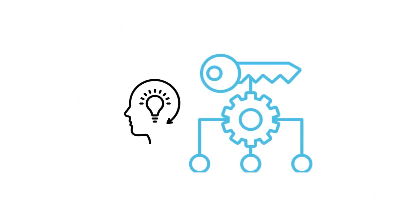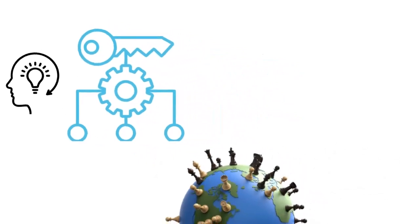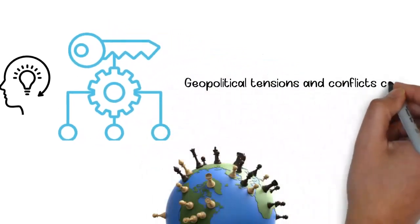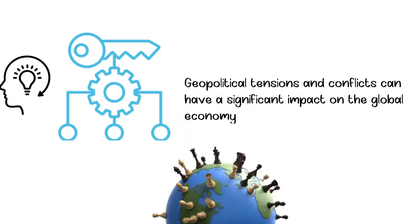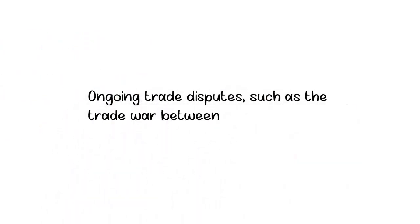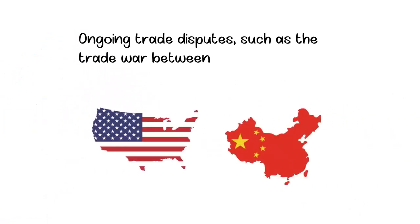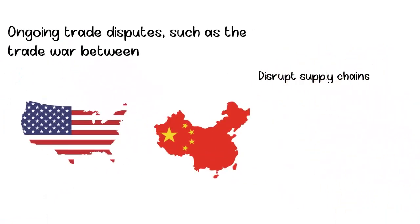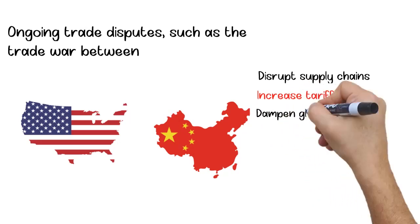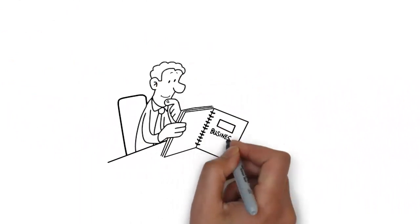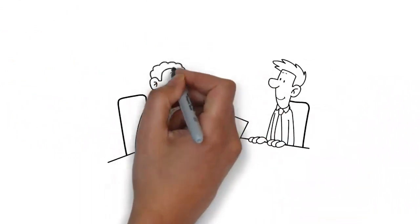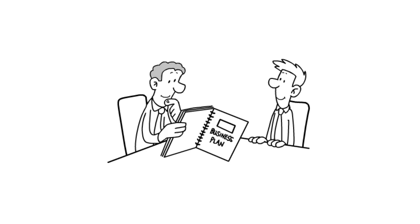In addition to Jim Rickards' insights, there are several other key factors that investors and consumers should consider in order to navigate the current state of the world economy. One important aspect is the geopolitical landscape. Geopolitical tensions and conflicts can have a significant impact on the global economy. Ongoing trade disputes such as the trade war between the United States and China can disrupt supply chains, increase tariffs, and dampen global economic growth. It is crucial for investors to stay informed about geopolitical developments and consider their potential impact on different sectors and markets.